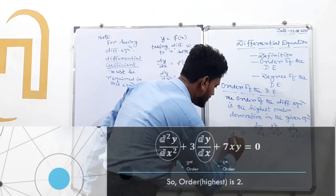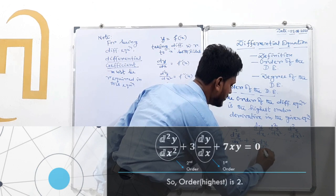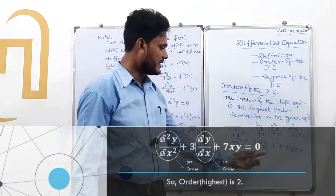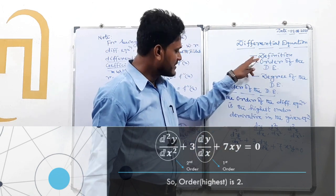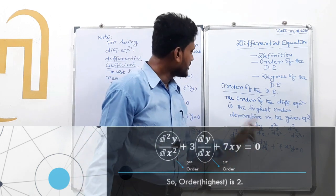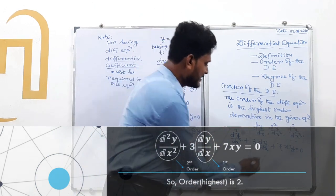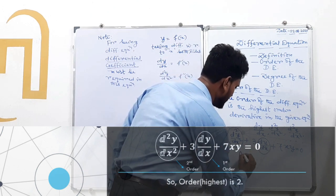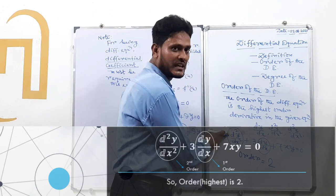Consider: d²y/dx² + 3·dy/dx + 7xy = 0. First, check that this is a differential equation — it contains differential coefficients, dependent variable y, and independent variable x. The highest order derivative present is d²y/dx², which is second order. Therefore, the order of this differential equation is 2.